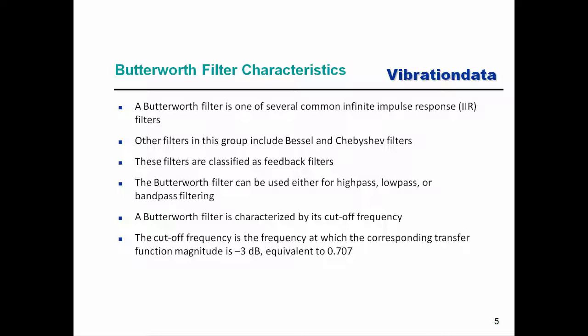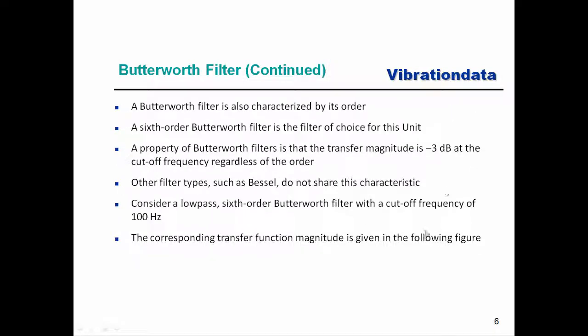A Butterworth filter is one of several common infinite impulse response or IIR filters. This group also includes Bessel and Chebyshev filters. These filters have feedback loops, which is important for stability. The Butterworth filter can be used for either high pass, low pass, or band pass filtering. It is characterized by its cutoff frequency. The cutoff frequency for a Butterworth filter is the frequency at which the corresponding transfer function magnitude is minus 3 dB, which is equivalent to a magnitude scale of 0.707.